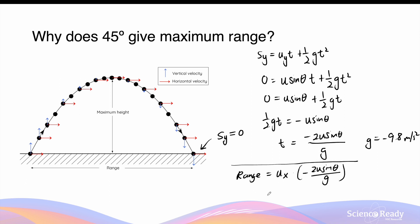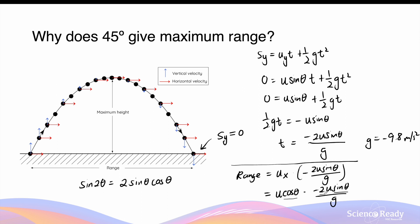Recall that the initial horizontal velocity can also be written in terms of u as u·cosθ. So the range becomes u·cosθ multiplied by −2u·sinθ / g. Using the double angle formula from trigonometry, sin2θ = 2·sinθ·cosθ, we can simplify this expression. Combining these terms gives us range = −u²·sin2θ / g.